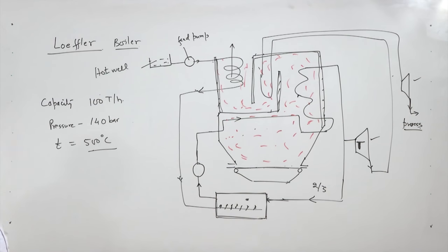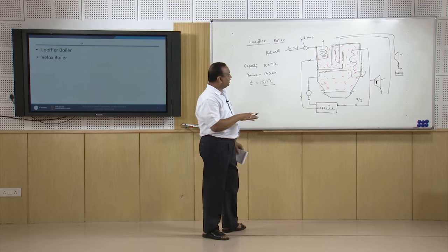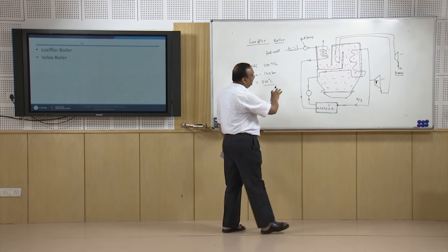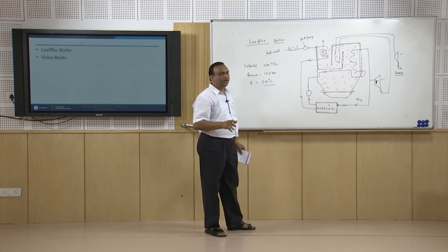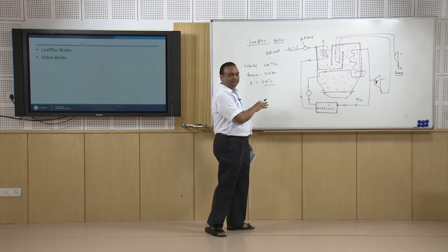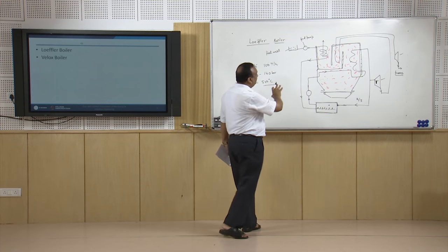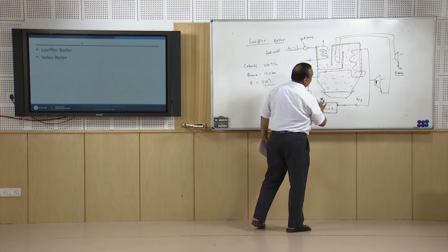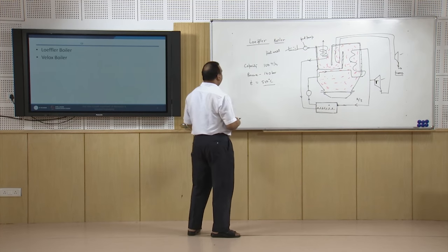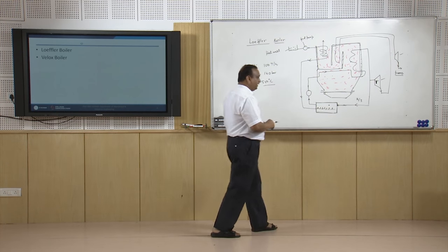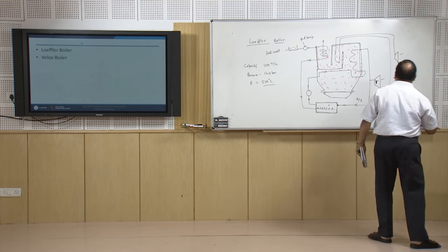It is a compact boiler. The actual boiler looks quite different from this schematic, but the basic working and movement of the fluid is like this. After this we will take up the last boiler, which is the Velox boiler.